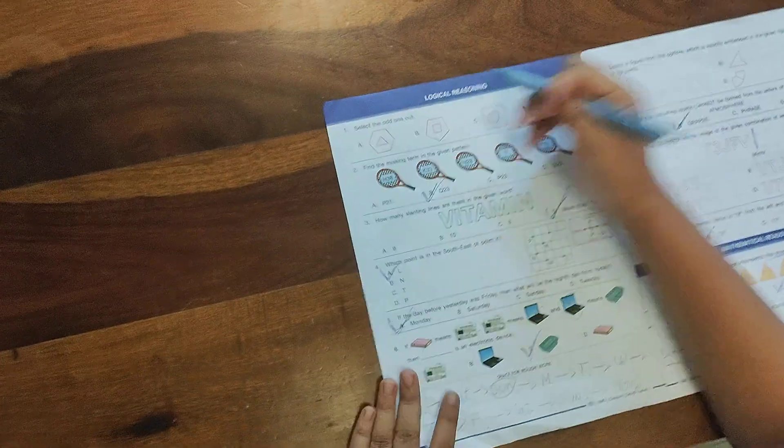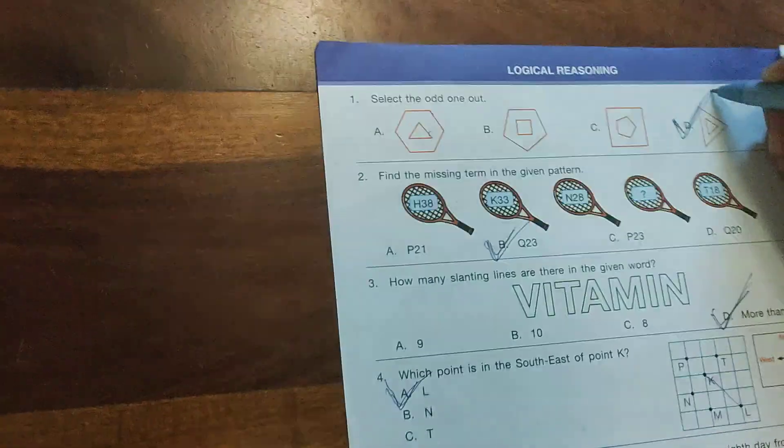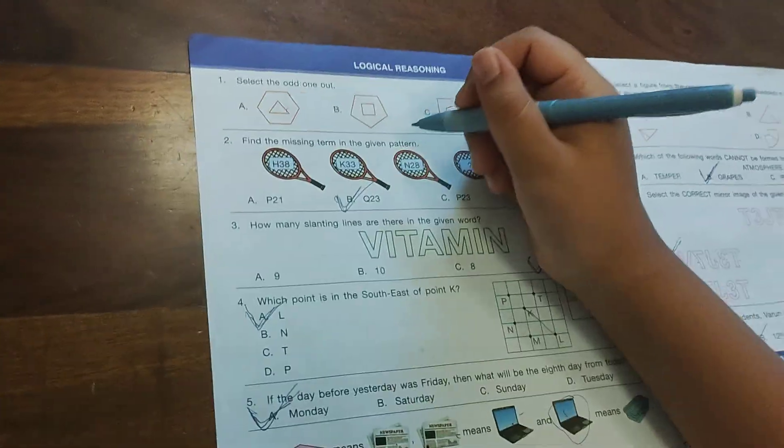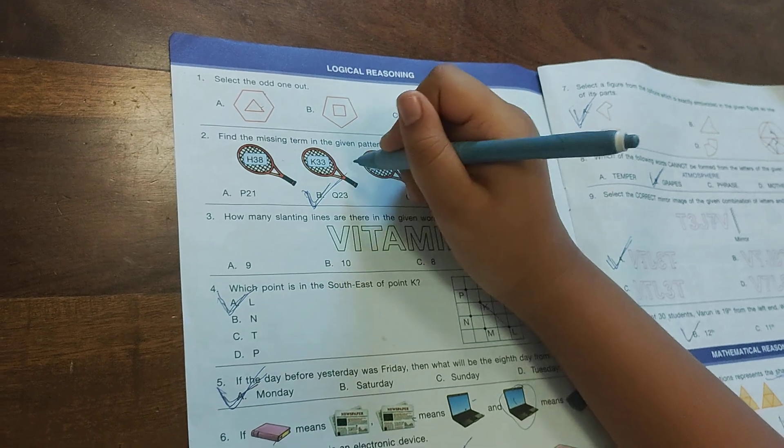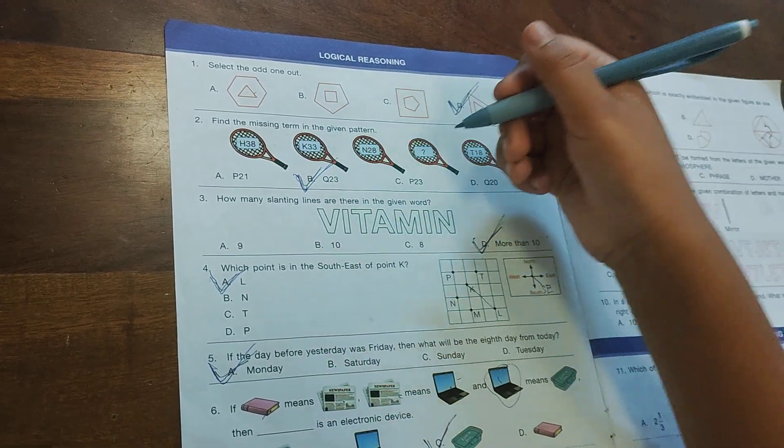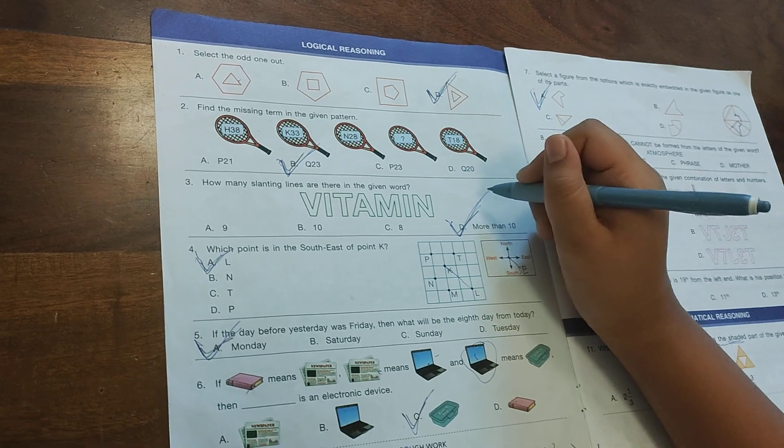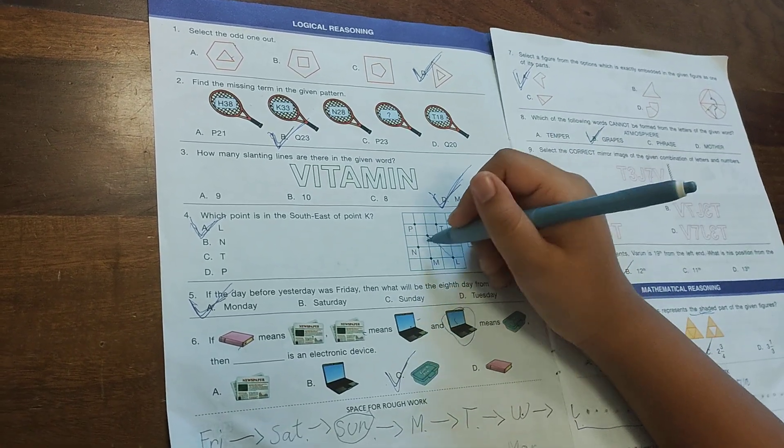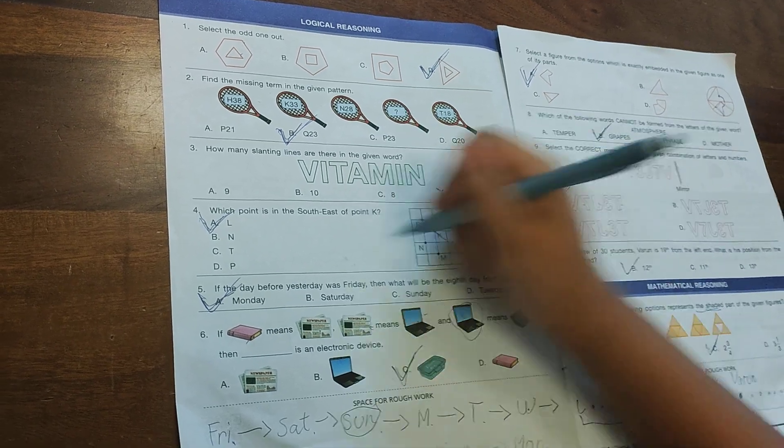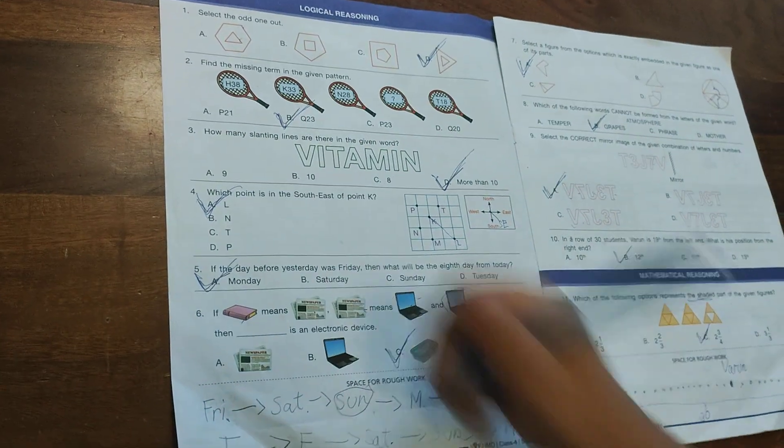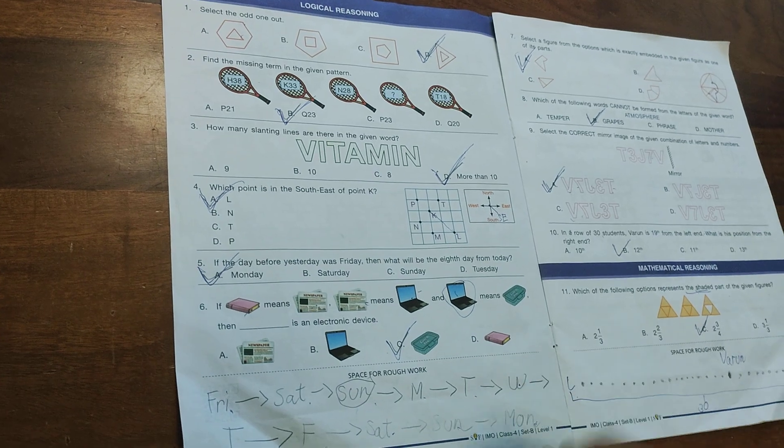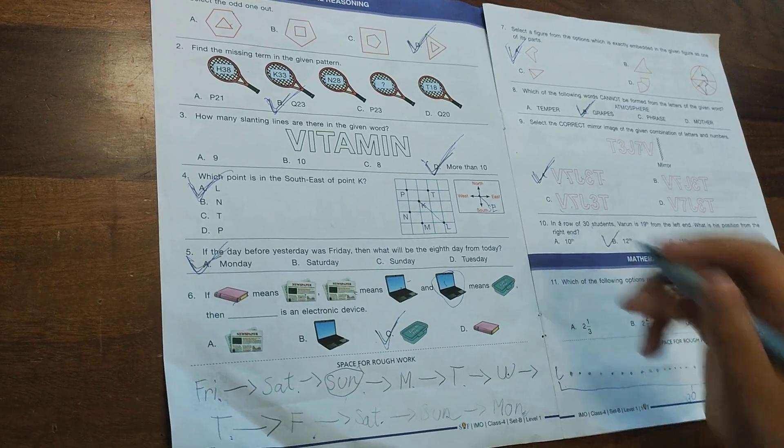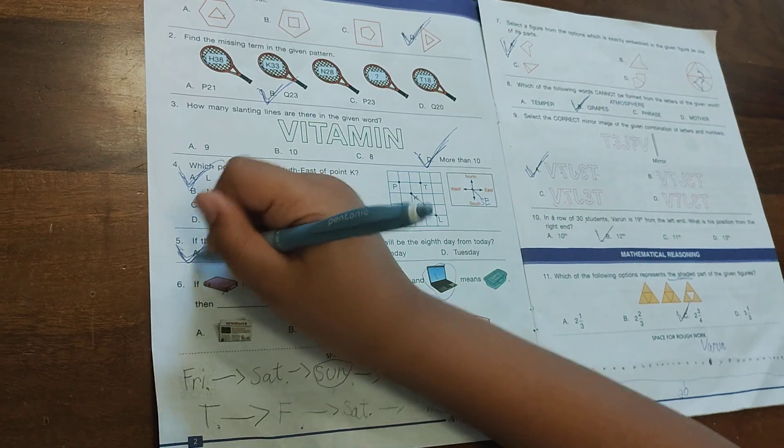Select the odd one out - the correct option is D. Find the missing term in the given pattern - the option is Q23. How many slanting lines are there in the given word? More than 10. Which point is farthest east of point K? The option is L. If the day before yesterday was Friday, what will be the 8th day from today? The option is Monday.